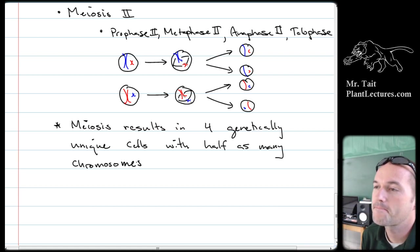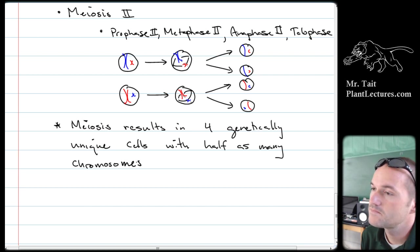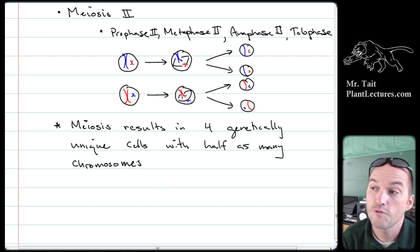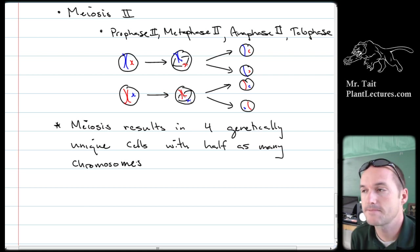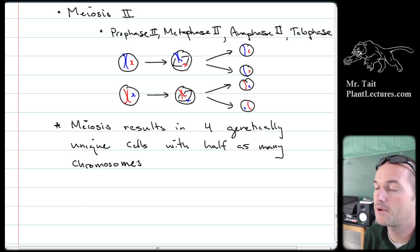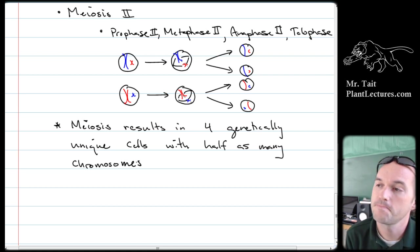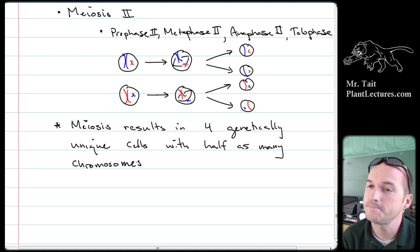In humans, we start with 46 chromosomes, and at the end of meiosis we have 23. Does anyone have questions on that? All right, that's it.